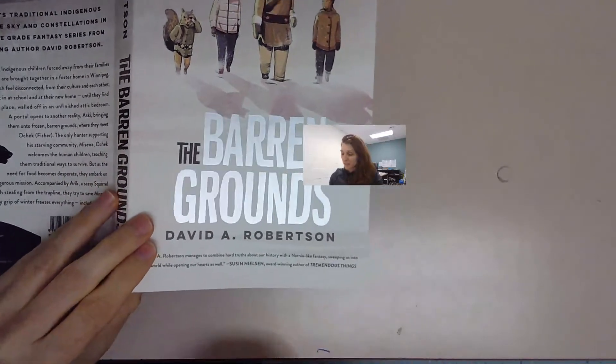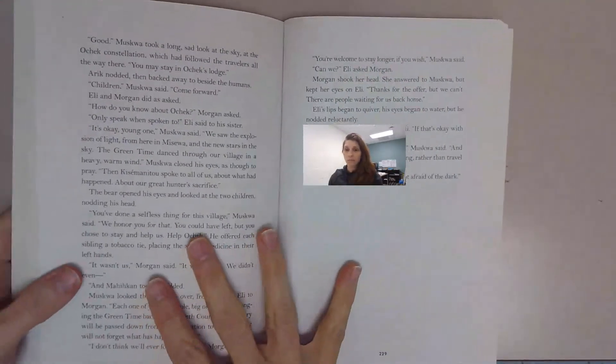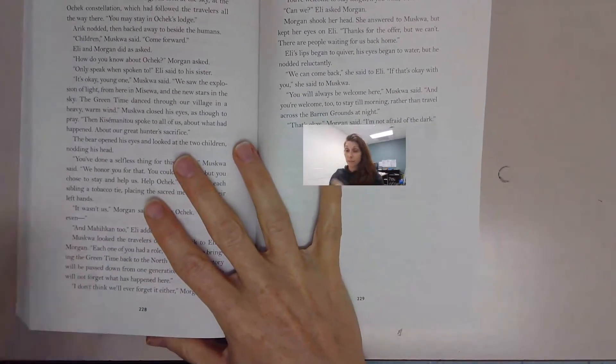Okay guys, welcome back to The Barren Grounds by David A. Robertson. We're nearing the end of the book. We are on chapter 25, this is part two.